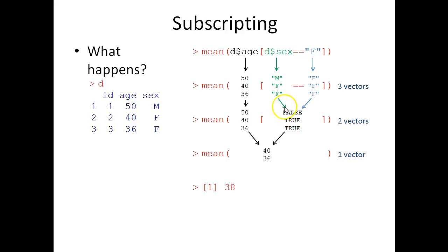And next, R takes this vector of length three and combines it, because of these brackets, with this logical vector. And it keeps only the numbers that are matched by true in this vector. So 50 is dropped because it's matched by false, while 40 and 36 are kept because these positions have a true in the index vector.